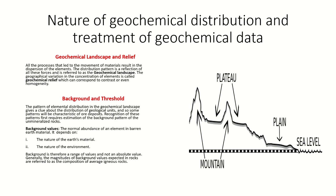This data is analyzed in order to prospect for ore deposits. This geochemical data has to be treated in such a way so as to bring out characteristic variation in the elemental distribution, or you can say the anomalies in the geochemical data. These treatments involve some approaches or analysis methods which cause the anomalies to stand out from the rest of the geochemical data.